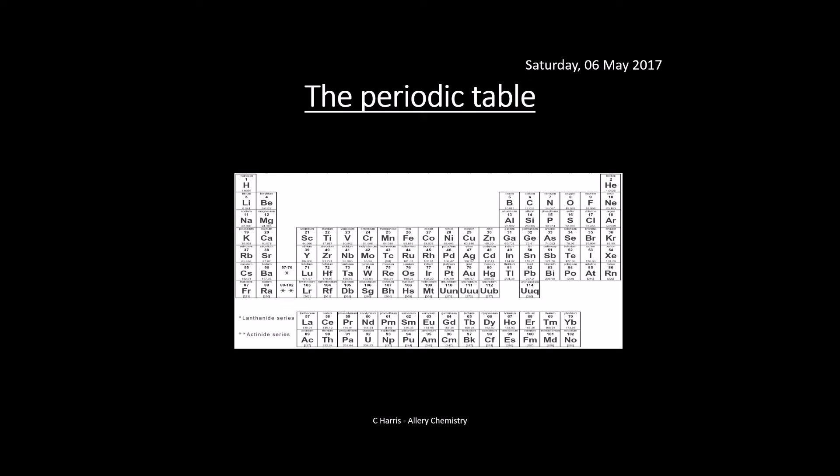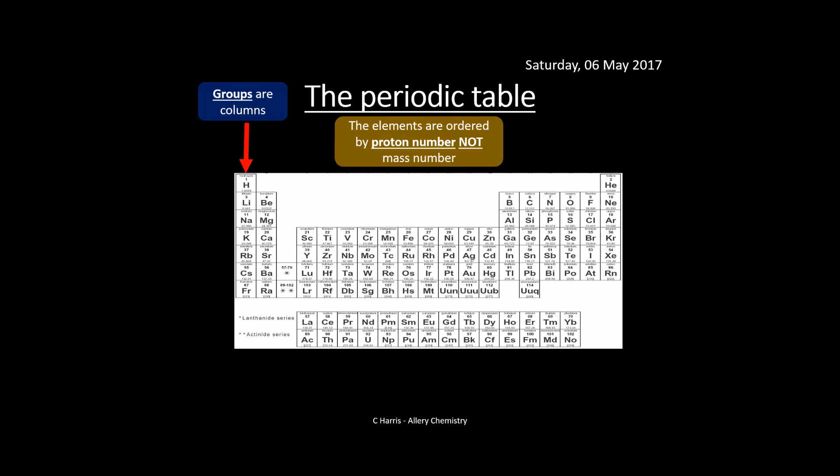So let's make a start. Periodicity is obviously to do with the periodic table. We're looking at trends — there are a lot of trends here, and descriptions, and some really important keywords for this topic. Basically, we need to know how the elements are arranged in the periodic table. The elements are ordered by proton number, not mass number. It's really important that you don't write down that they're ordered in terms of mass number — it's always proton number. The smaller number on the periodic table tells you the number of protons.